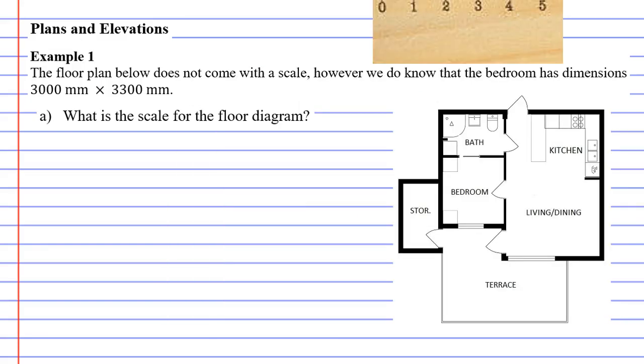So let's get into our example now, Example 1, based on the same floor plan that I showed you before. This floor plan doesn't really have a scale given, but they have told us that the bedroom has dimensions 3,000 millimeters by 3,300 millimeters. They always seem to put floor plans in millimeters for some reason.